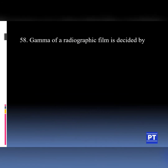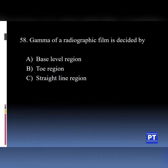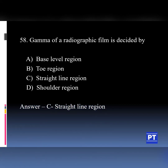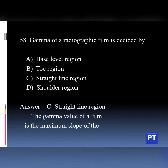Question number 58: Gamma of a radiographic film is decided by which region? Option A: Base level region. Option B: Toe region. Option C: Straight line region. Option D: Shoulder region. The answer is Option C, straight line region. The gamma value of a film is the maximum slope of the characteristic curve as shown here.